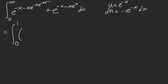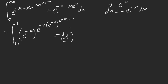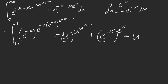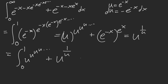We have e to the negative x times e to the negative x times e to the negative x — this goes on forever. So this is u to the power of u to the power of u, going on forever. And then e to the negative x being multiplied by e to the x is the same as u to the power of 1 over u. Wait — this is the exact same integral we just solved in the previous integral!